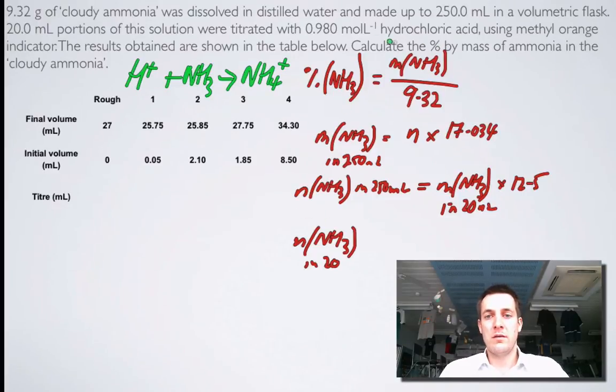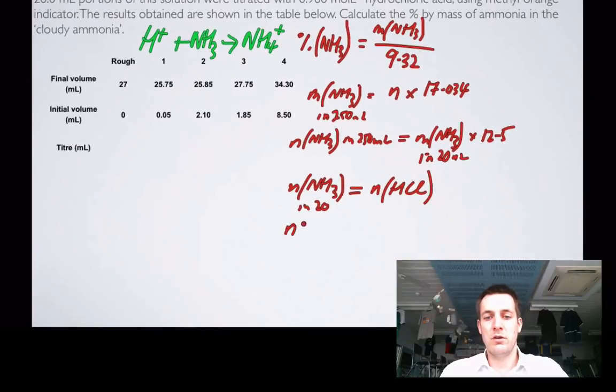And because there's one H+ in every HCl, then I know that the number of moles of ammonia in 20 milliliters is equal to the number of moles of HCl that's in my average titer. And the number of moles of HCl is equal to the concentration times the volume, the volume being this average titer volume.